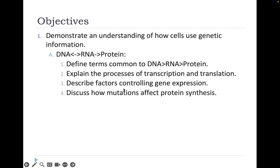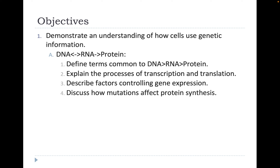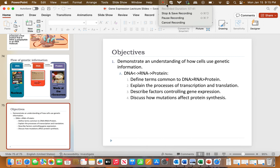Now you should be able to understand how cells use genetic information — the flow from DNA to RNA to protein. You should define terms common to DNA, RNA, and protein; explain transcription and translation; describe factors controlling gene expression; and discuss how mutations affect protein synthesis. Write down answers to these objectives, actually define the terms, explain the processes, and describe the factors before you feel done with this chapter. Bring any questions to office hours or class.